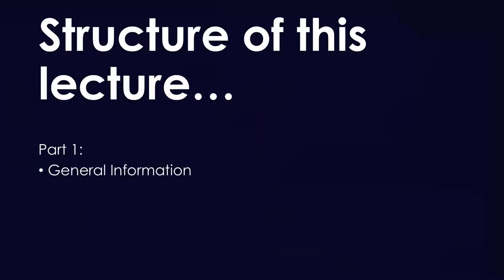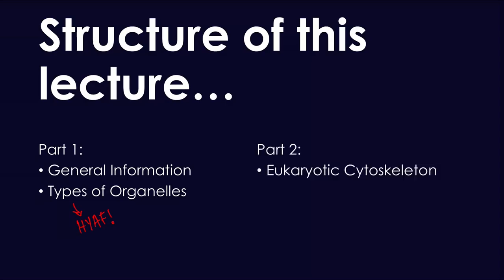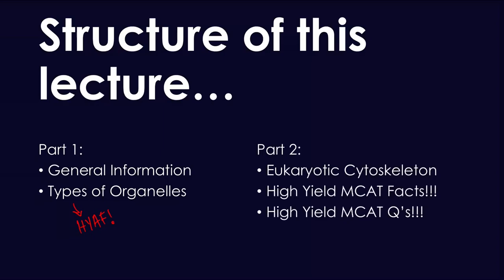Today, in part one, we're going to be discussing the general information about eukaryotes that you need to know, as well as the types of organelles. This is very high yield, because the test writers for the MCAT exam like to test you on this. Definitely understand what happens in each of the organelles in the eukaryotic cell. Part two, we're going to be discussing the cytoskeleton, as well as high yield MCAT facts and questions, so stay tuned for that video.